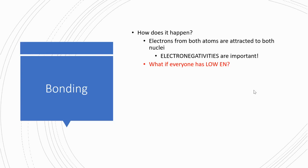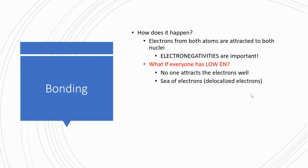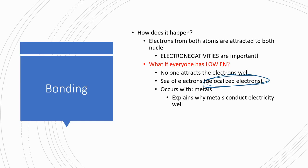If everyone has low electronegativity, no one is really attracting the electrons very well. Nobody has the ability to pull the electrons into their own cloud. So we end up forming a sea of electrons — we call these delocalized electrons. If we're talking about atoms with low electronegativity, that means we're talking about metals. This explains why metals can conduct electricity so well, because they already have electrons that are not being very well held, and so extra electrons in the form of electricity can easily jump in and move through them.